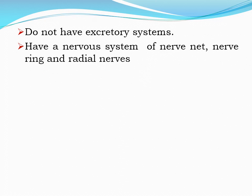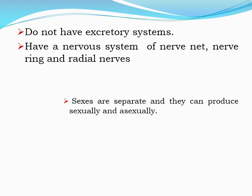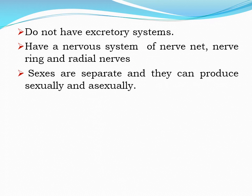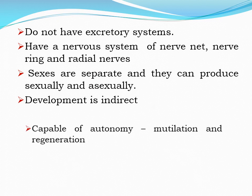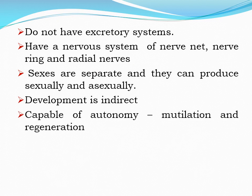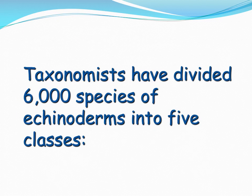The excretory system is absent. The nervous system consists of a nerve net, nerve ring, and radial nerves. Sexes are separate, sexual reproduction takes place, development is indirect, and echinoderms are capable of autonomy and regeneration.